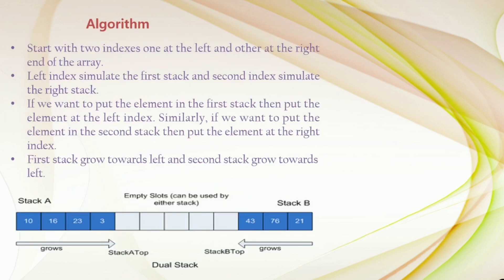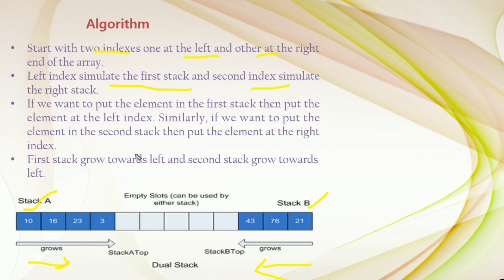The algorithm to implement two stacks: start with two indexes, one at the left and one at the right end of the array. The left index simulates the first stack and the right index simulates the second stack. If we want to put elements into the first stack, put the element at the left index; for the second stack, put the element at the right index. The first stack grows towards the right and the second stack grows towards the left.